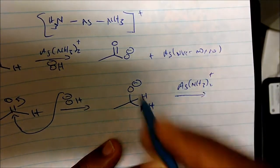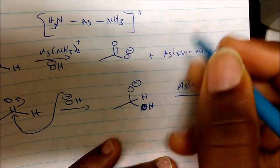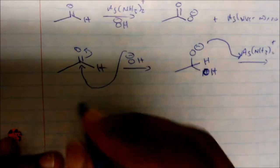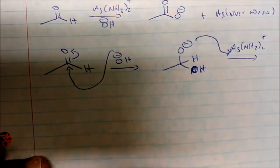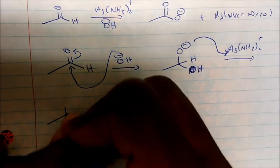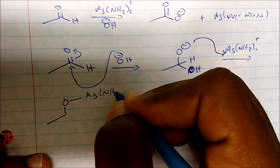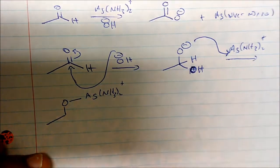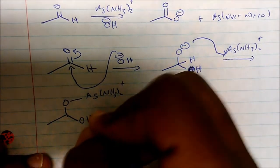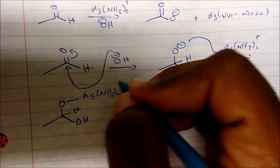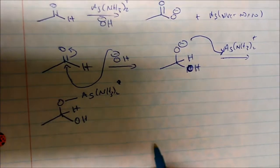In the second step of the mechanism, this oxygen is going to come in and bond to the silver atom itself. So oxygen is going to come in and bond to the silver atom and we get something that looks like this - an alcohol.